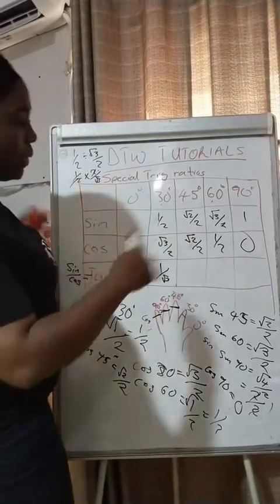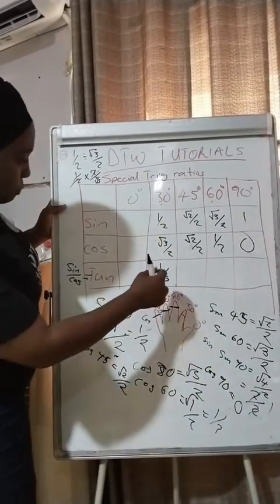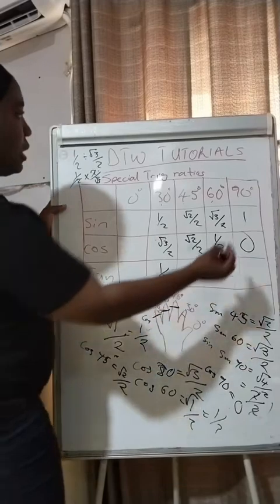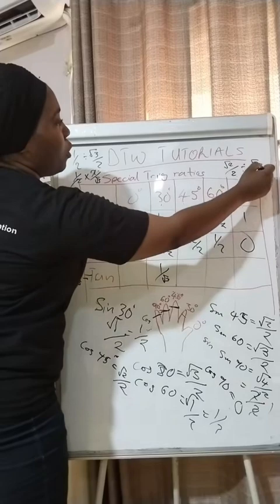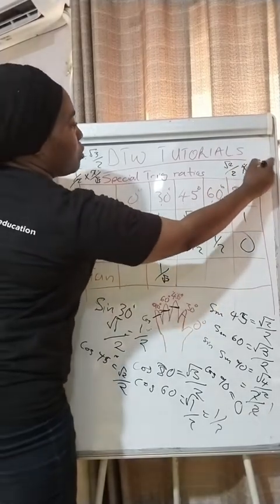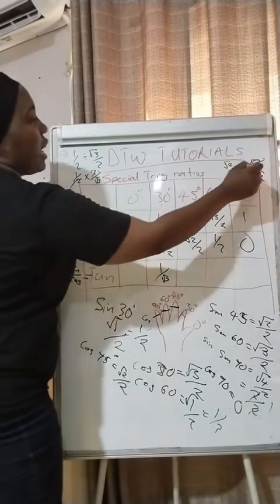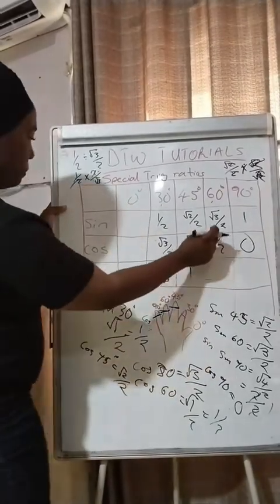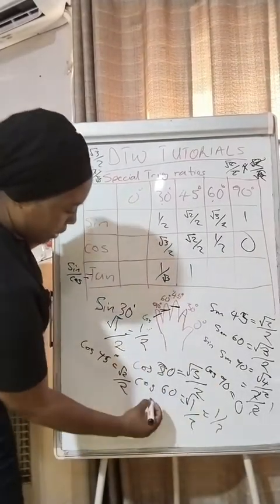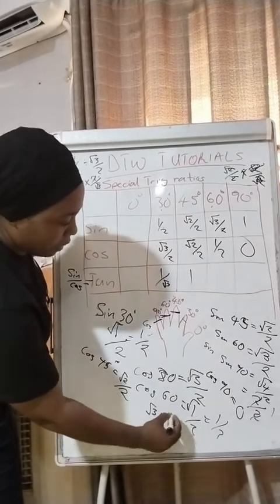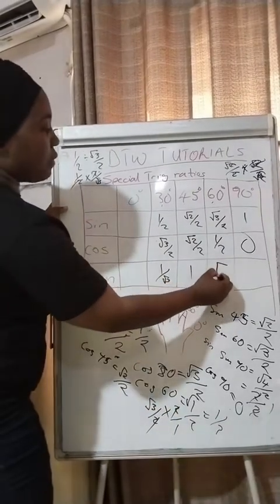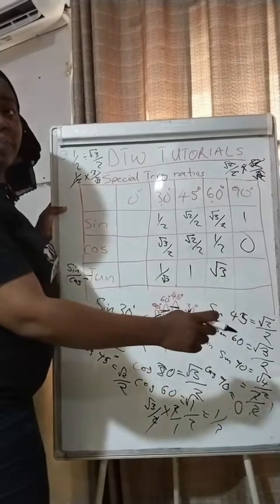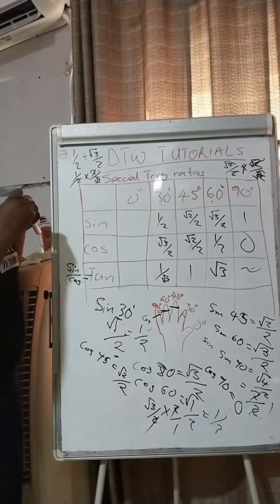For tan 45: divide sin 45 by cos 45 — (√2/2) ÷ (√2/2) = 1. So tan 45 = 1. For tan 60: (√3/2) ÷ (1/2) = √3/2 × 2/1 = √3. So tan 60 = √3. For tan 90: sin 90 / cos 90 = 1 / 0 = infinity. So tan 90 is undefined (infinity).